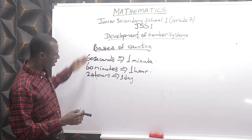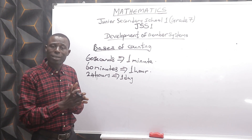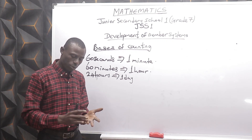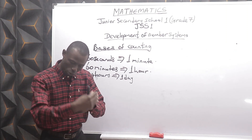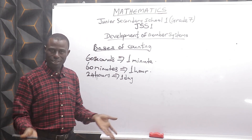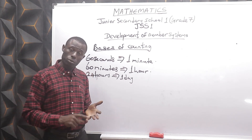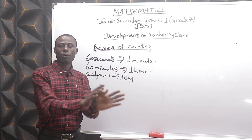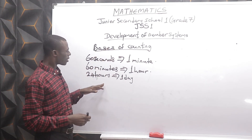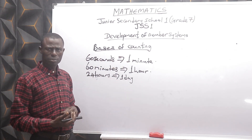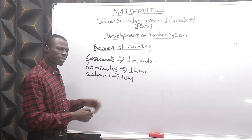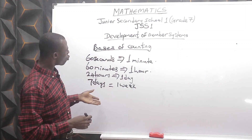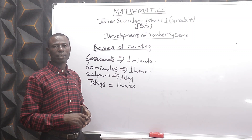Our elders count in tens when counting money so they don't get confused — they count 1, 2, 3, up to 9, and on the 10th they bundle it and put it down. Some count in 50s; in the bank today they count in 50s — a bundle of money is 50,000. Also, we say 7 days make 1 week. So let's apply this in our day-to-day activities. Example 1.